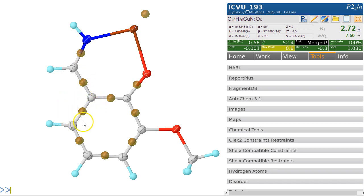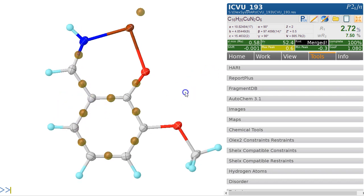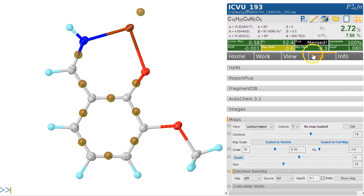We can visualize this slightly differently by going over to the maps area in OLex2. This is in Tools > Maps. We're looking at a difference map. We're not actually aligned here.